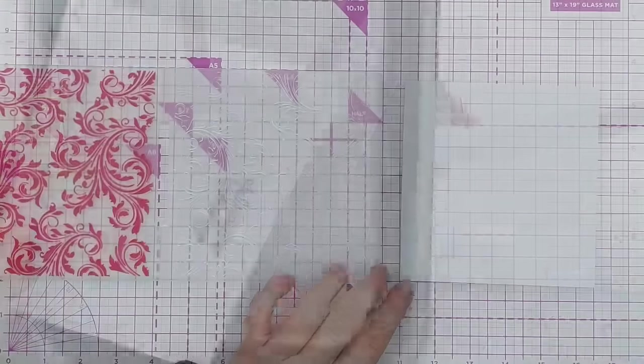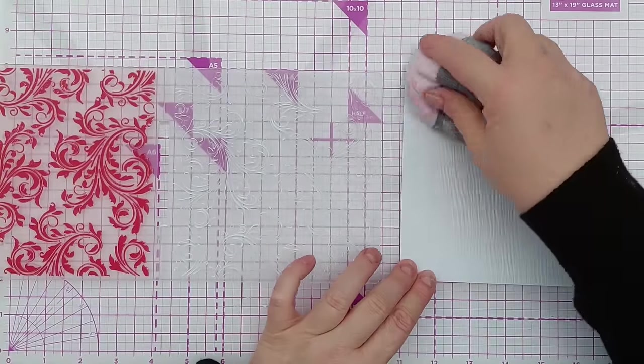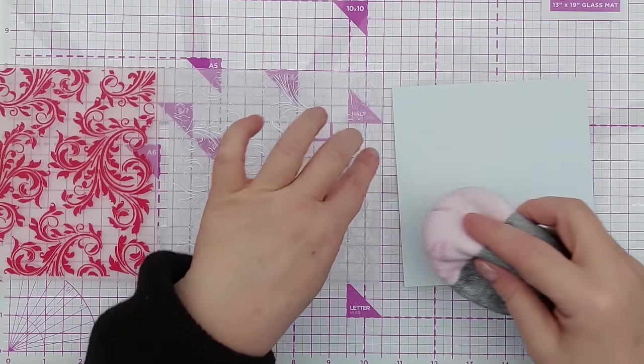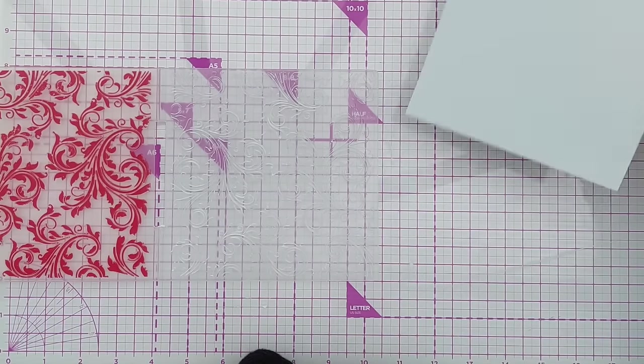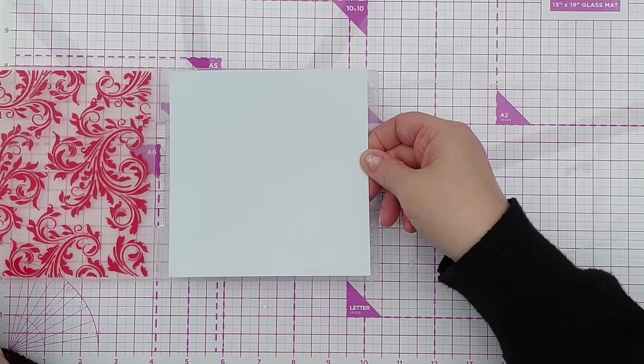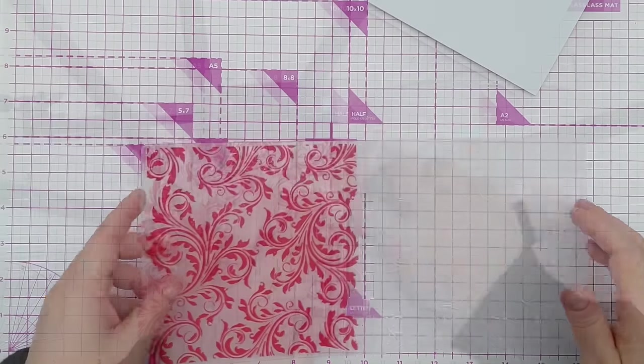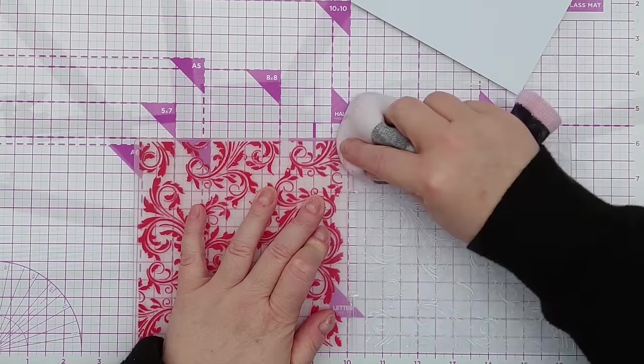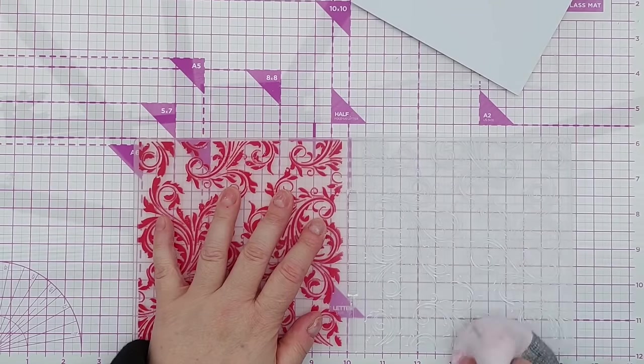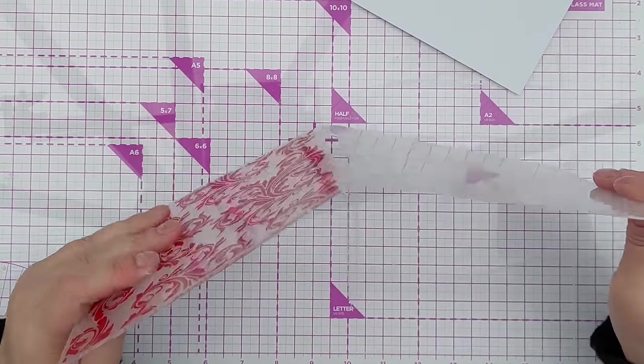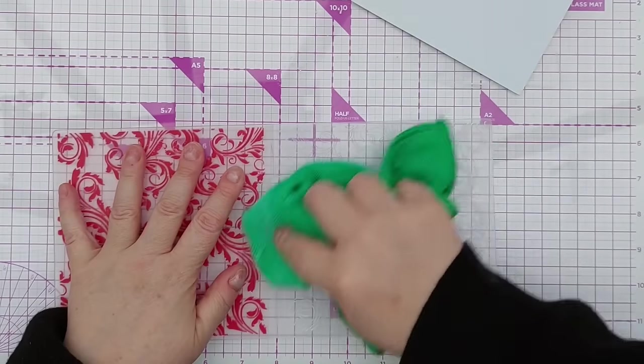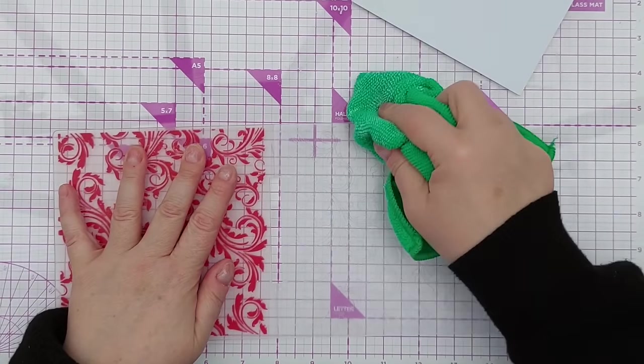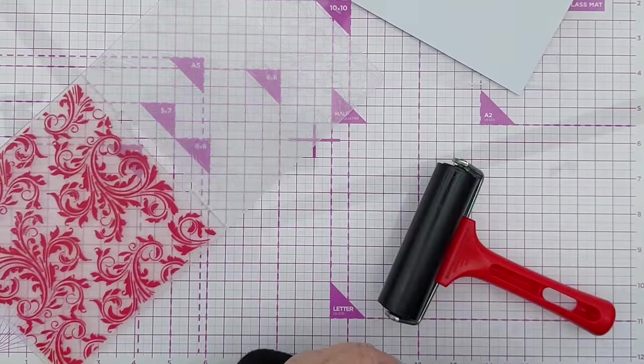The next step is to heat emboss and dry emboss this piece of linen textured cardstock. I'm also going to put some cornflower on my embossing folder to destatic it and degrease it, and I'm going to brush off the excess with a microfiber cloth.